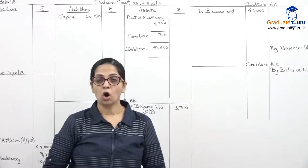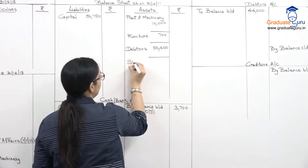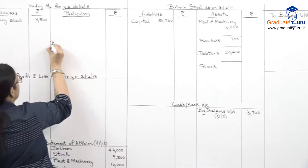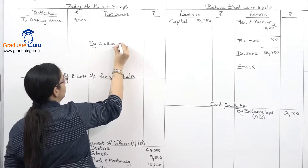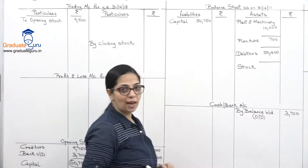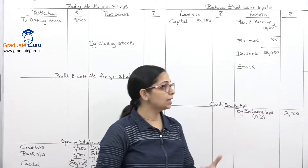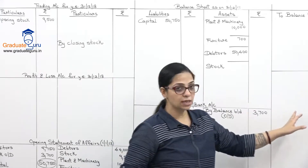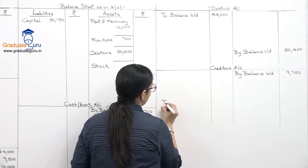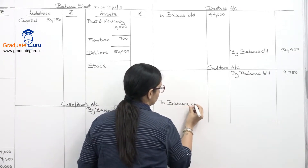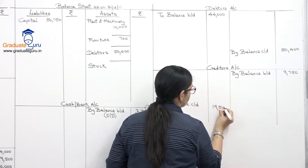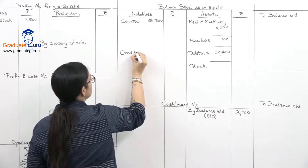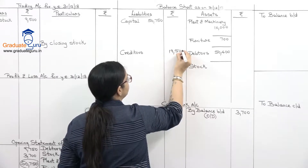Closing stock is missing, so I leave space for it in both the balance sheet and trading account. Plant and machinery closing balance is 10,700 — same as opening, depreciation will be adjusted later. Creditors closing balance is 19,500 — recorded in the creditors account as balance carried down and in the balance sheet on the liability side.